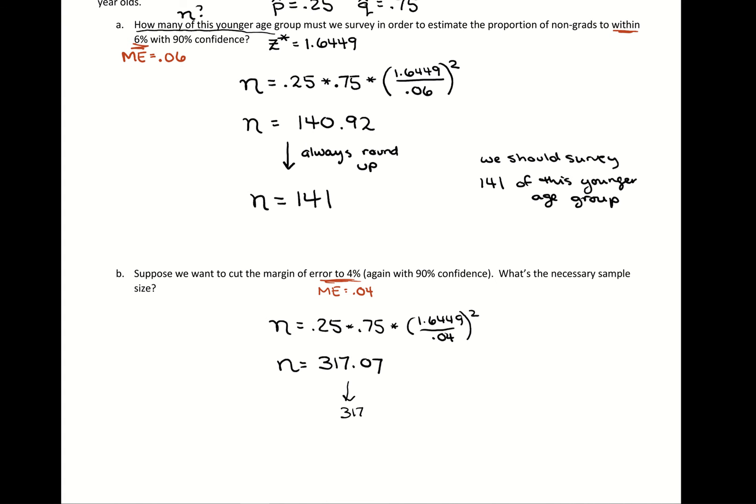And if we follow the rounding rule, we've actually introduced a teeny bit more error. So instead, what we want to do is round it up. We want to take that and round it up to 318.